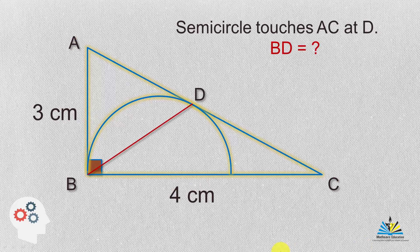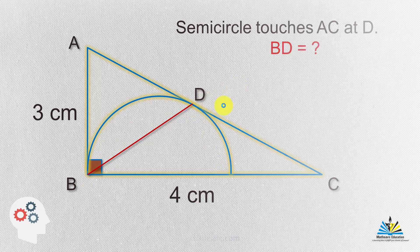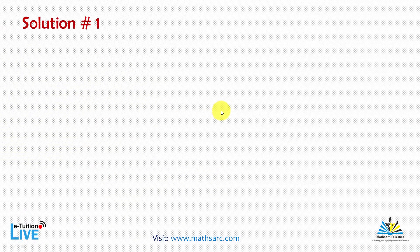Here is Mr. Ramish Chandra having a geometric problem for you. Here is triangle ABC, right angle at angle B, AB length is 3 cm, BC length is 4 cm, and D is the point where the semicircle is touching. Our aim is to find the length BD.